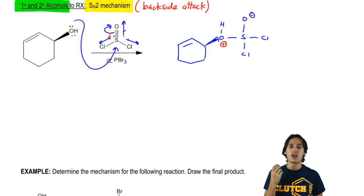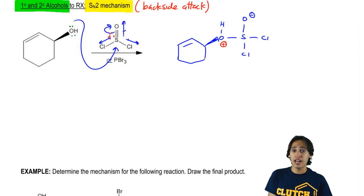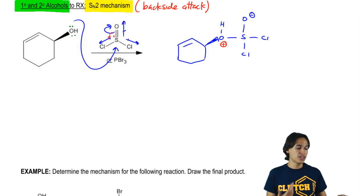The next step is that this oxygen does not like having that negative formal charge and it actually has two really good leaving groups right there. What's going to happen is that this negative charge is going to go down and reform the double bond and kick out one of these chlorines.